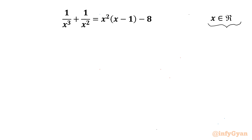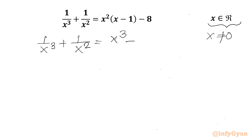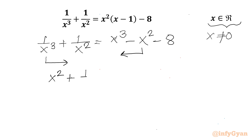Let us get started by writing x cannot be 0, as it is in the denominator. Now I will write the equation as 1 over x cubed plus 1 over x squared equal to x cubed minus x squared minus 8. I will take minus x squared to the LHS and 1 over x cubed to the RHS, so the equation becomes x squared plus 1 over x squared on the LHS, and x cubed minus 1 over x cubed minus 8 on the RHS.